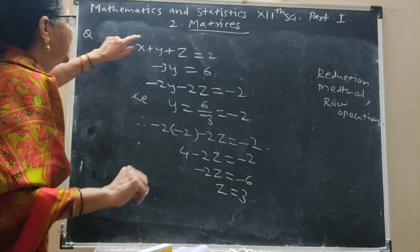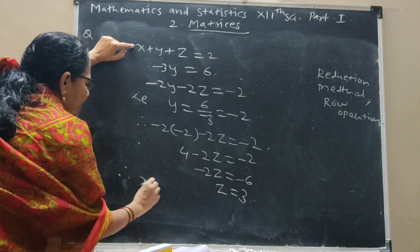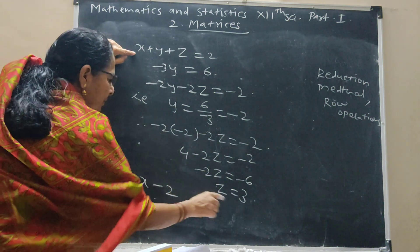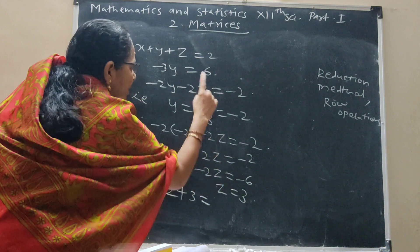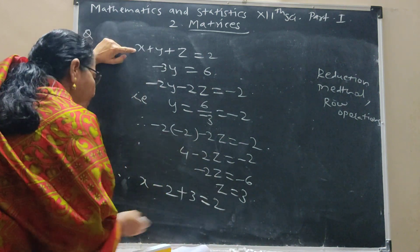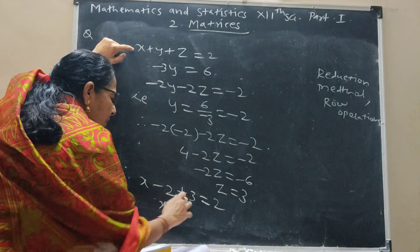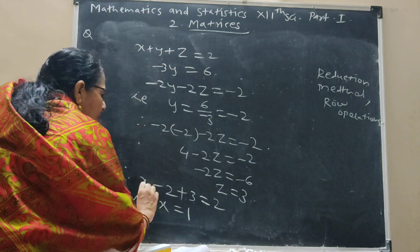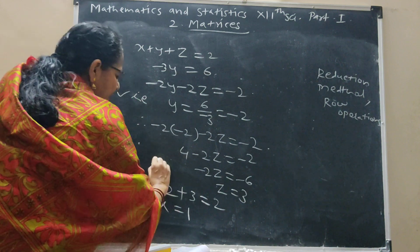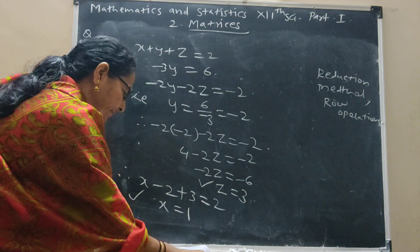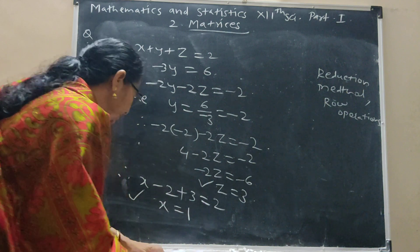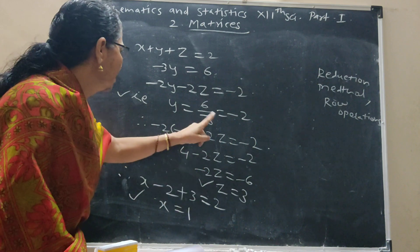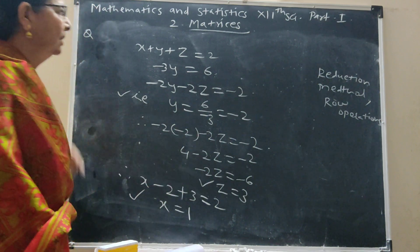Put all the values into row 1. Therefore x plus y plus z equals 2: x plus negative 2 plus 3 equals 2, so x plus 1 equals 2, therefore x equals 1. So the final answer is: x equals 1, y equals negative 2, and z equals 3. These are the correct values.